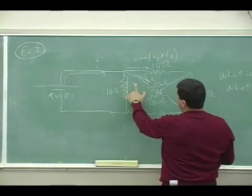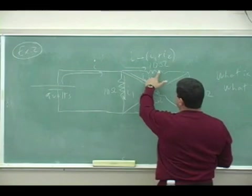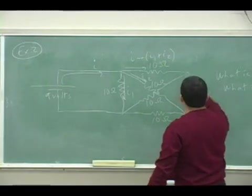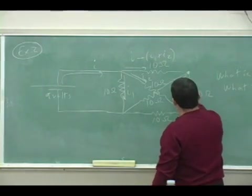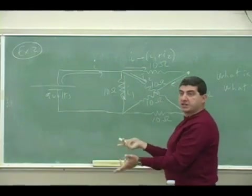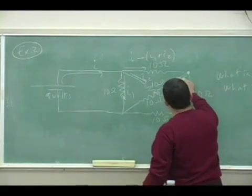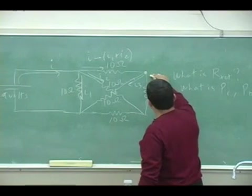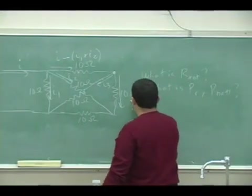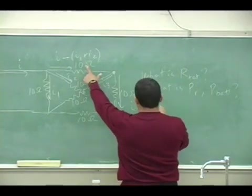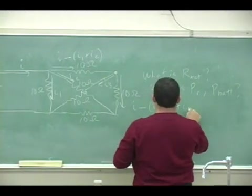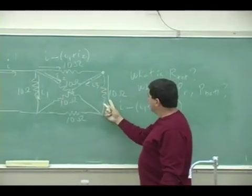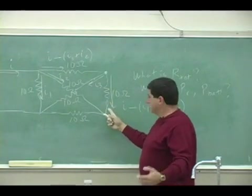In other words, whatever current goes through these two, this one is the original one minus the sum of those. Then it goes over here, then it breaks into I3. And then what happens here? This one will be I minus I1 plus I2 plus I3. So this is the remainder of what's left.